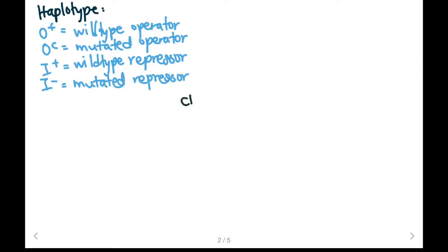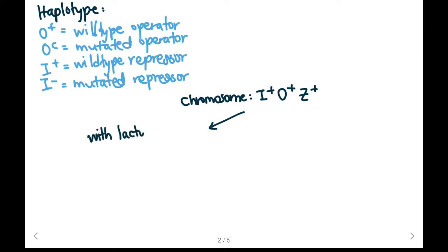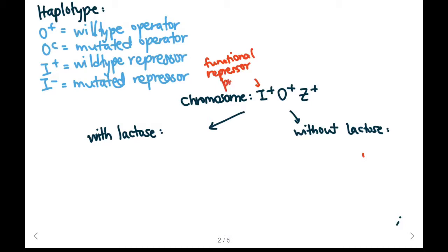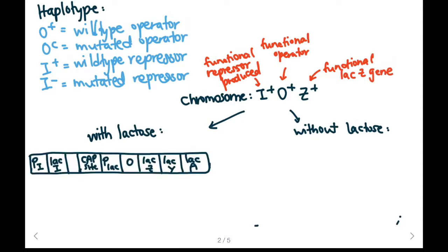So if we have a chromosomal bacterial cell with the haplotype I-plus, O-plus, and Z-plus, and we want to determine whether beta-galactosidase is produced with and without lactose, let's look at these two scenarios. I-plus means that we have a functional repressor produced. O-plus is going to mean we have a functional operator, which means that our repressor can bind to the operator. And Z-plus is referring to a functional lac Z gene, which means beta-galactosidase can be produced.